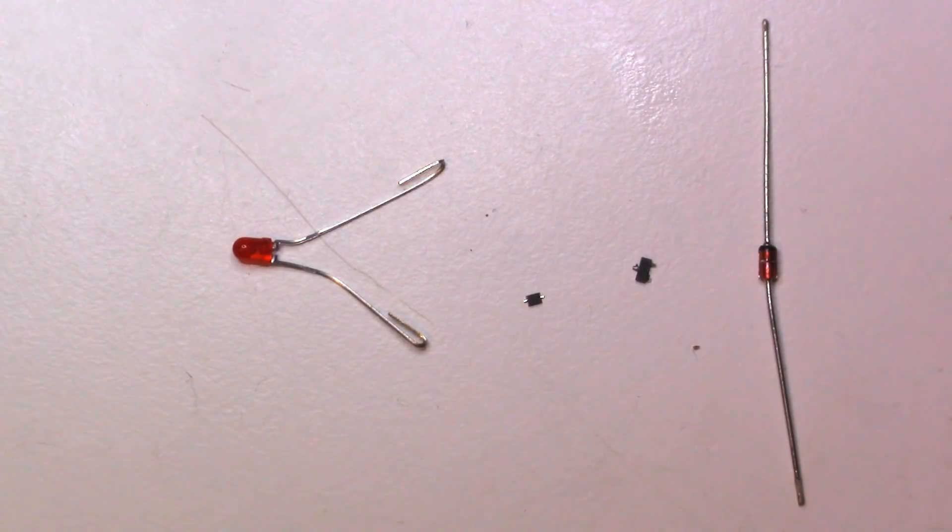I arranged some of them here. I guess you're wondering what an LED is doing next to a diode. The answer is pretty simple: LED means light emitting diode.